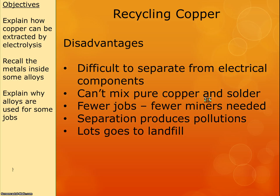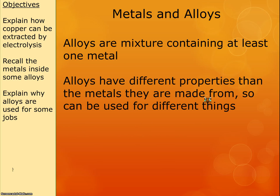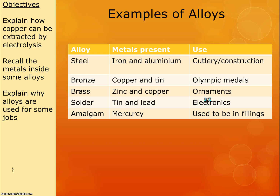You just need to be able to discuss the pros and cons. Alloys is the last thing on this topic — alloys are mixtures that contain at least one metal, but there must be something else in there as well. Alloys tend to have different properties than the metals they contain, meaning you can use them for more things. You need to know what they're used for and what's in them. Steel can contain iron and aluminium, and examples are cutlery or construction.